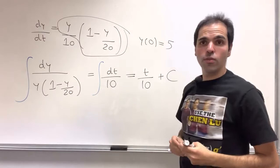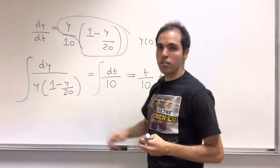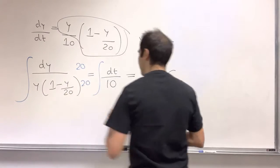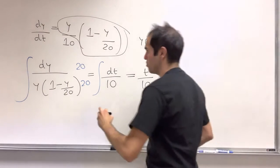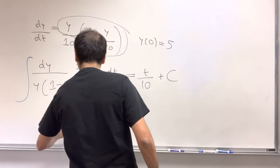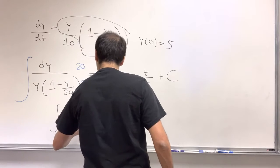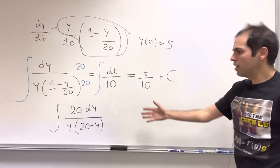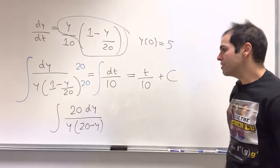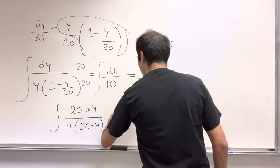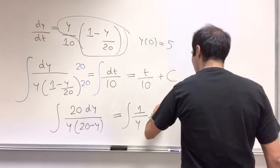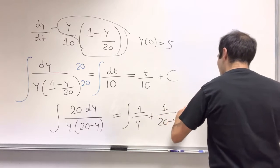For the left hand side, what we want to do, we just want to multiply top and bottom by 20. So this is 20 and this is 20, and then what this becomes, the left hand side, we get 20 dy over y times 20 minus y. And then, if you evaluate this using partial fractions, I will skip this step, it turns out you get a nice simplification. It's just integral of 1 over y plus 1 over 20 minus y dy.